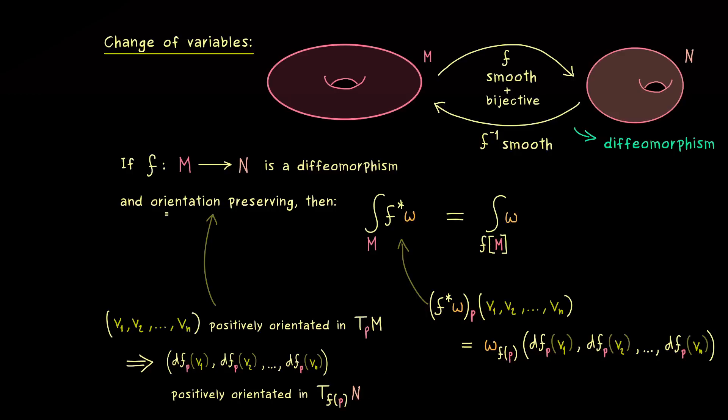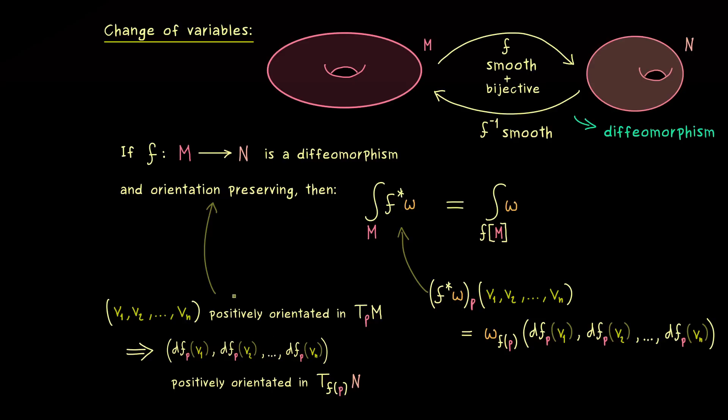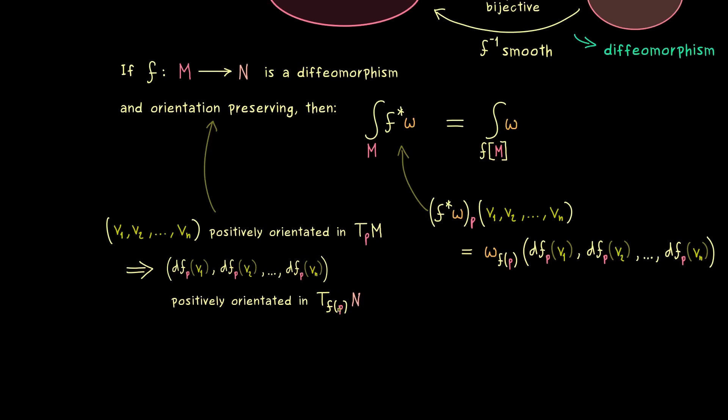The only difference is now that we live in Tf(p)N. And now you see we call f orientation preserving if this one works for every p on M. Hence f simply conserves such a positive orientation. And with that you now know all the requirements of the change of variables formula and we can go to the proof of it.